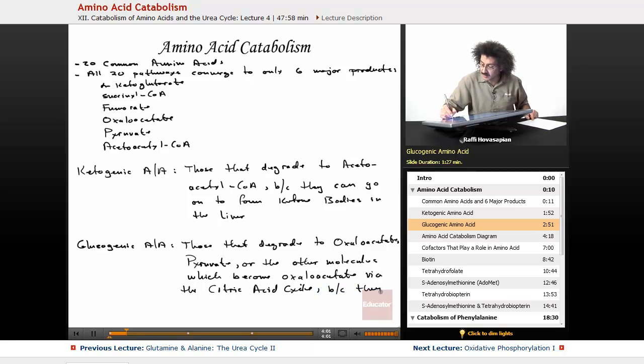Because they go on to form glucose. They go on to form glucose in gluconeogenesis. So ketogenic amino acids, glucogenic amino acids.